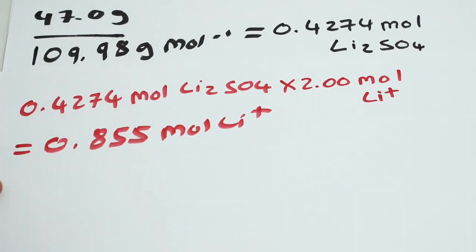Okay, so there we go. We have now worked out the number of moles of a particular ion in a sample of a substance using this method. I hope you enjoyed this video and found it helpful. If you liked it, please give it a thumbs up and don't forget to subscribe to the channel. Thank you for watching and I'll see you next time.